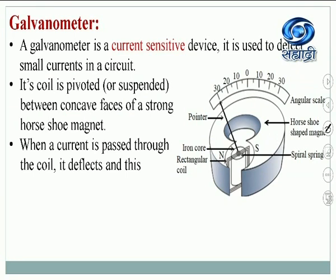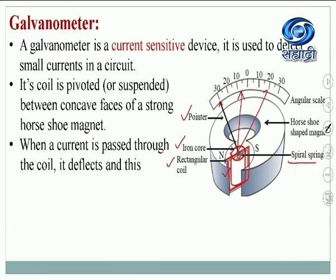There is a spiral spring shown in the construction. There is a rectangular coil — this is that rectangular coil. Then there is an iron core, which is used to increase the strength of the magnetic field. There is a pointer: when the rectangular coil deflects, the pointer connected to this rectangular coil rotates on the angular scale, and we can measure the deflection in the galvanometer.